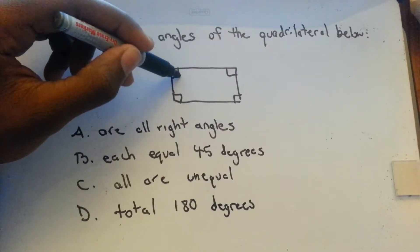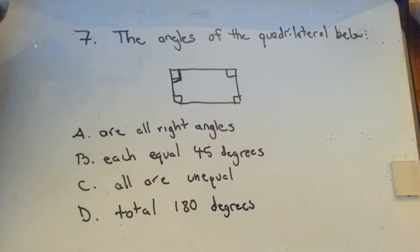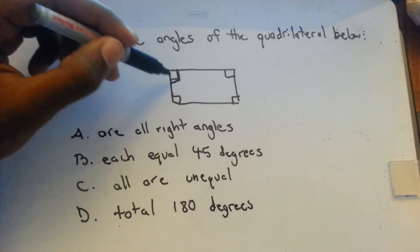Basically this little box here, that means that that angle is a 90 degree angle.